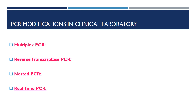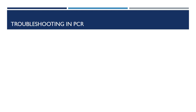We will discuss all these four modifications — multiplex PCR, RT-PCR, nested PCR, and real-time PCR — which are used in the clinical laboratory, in another video. Troubleshooting in PCR. In conventional PCR, problems with reaction components and amplification protocols are diagnosed by running a gel. Now we will learn about possible causes and solutions of some main problems.